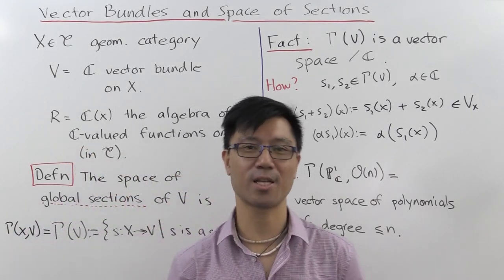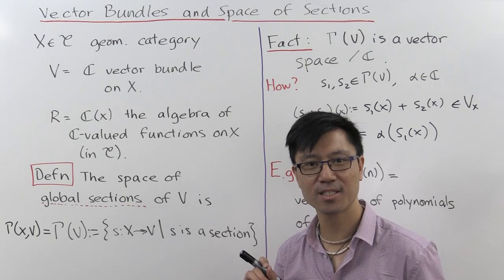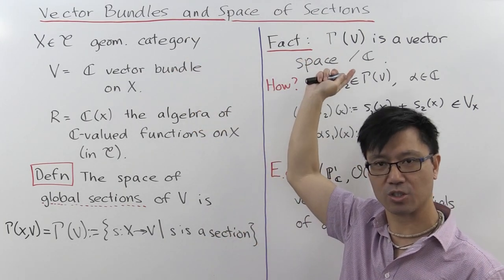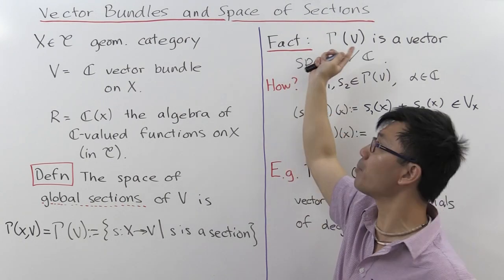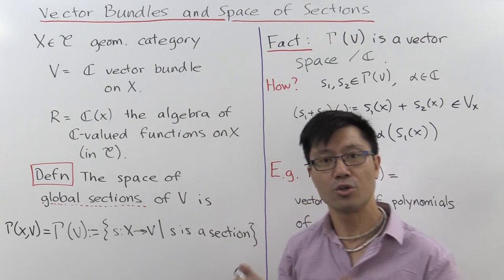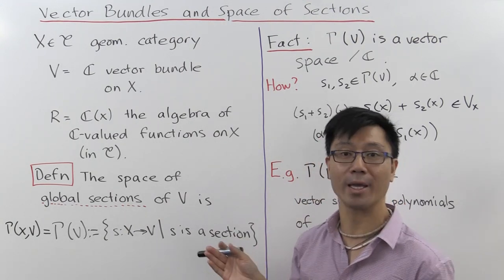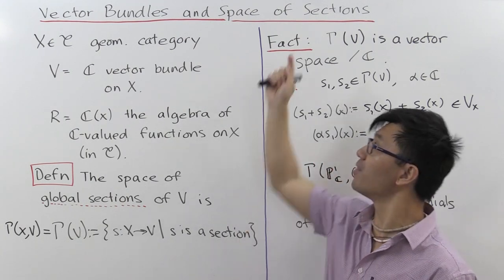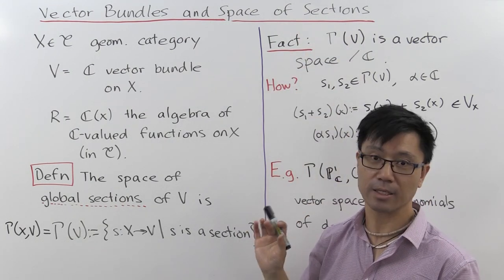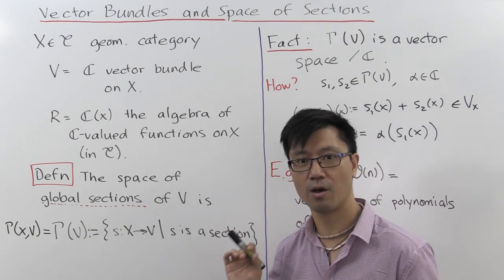Hi, I'm Daniel Chan from UNSW Sydney. Welcome to another adventure in pure mathematics. Today I want to talk about vector bundles and the space of sections. The key point here is that if you use the space of sections of a vector bundle, you can have an alternative way of understanding and viewing vector bundles. This alternative approach also relates the theory of vector bundles to the theory of modules over a ring.